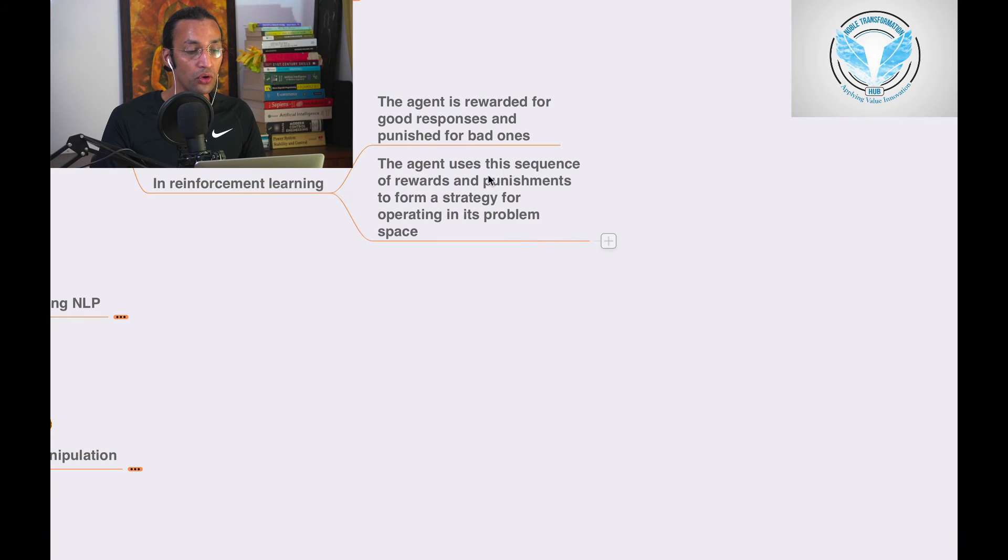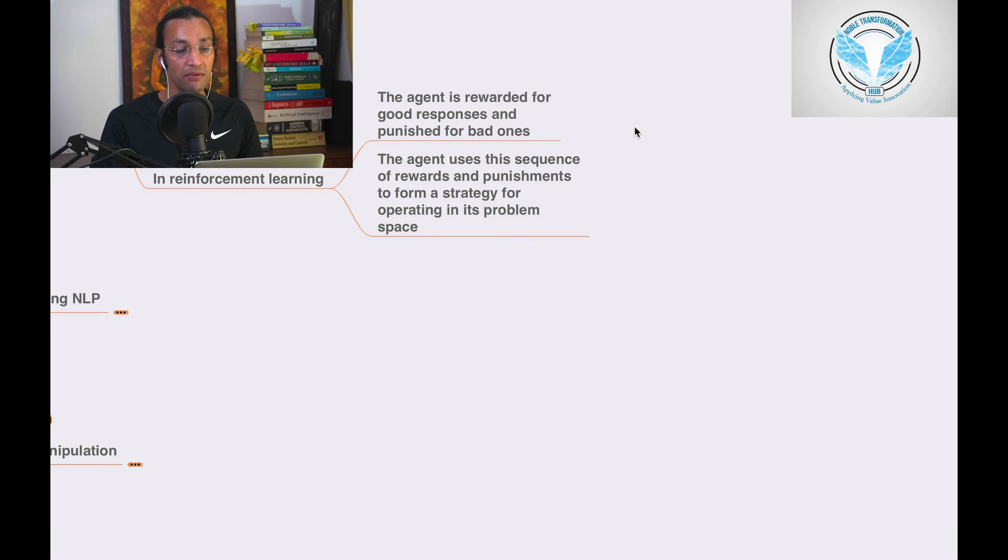Let's go to reinforcement learning. In this third branch of machine learning, the agent is rewarded for good responses and punished for bad ones. The agent uses this sequence of rewards and punishment to form a strategy for operating in its problem space.